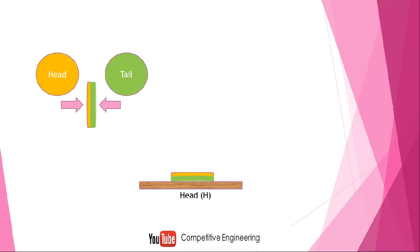There is one more chance: if I throw the coin, head may also come, so head is one more possible outcome. All the possible outcomes of an experiment are normally denoted as sample space S. An experiment is simply the activity we are doing — here we are tossing the coin. The sample space contains all possible outcomes: head (H) and tail (T).